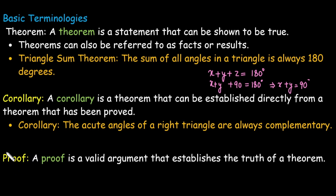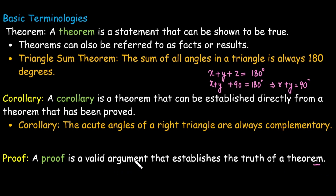Next is the word proof. Basically, a proof is a valid argument that establishes the truth of a theorem — we are providing a particular argument to show that the theorem is true.